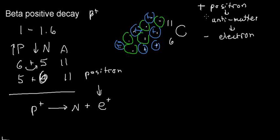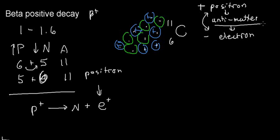Other than charge, the positron and electron have the exact same mass — they are counterparts to one another. They are essentially the same particle in terms of mass but exactly opposite in charge, and thus they are antimatter to one another.